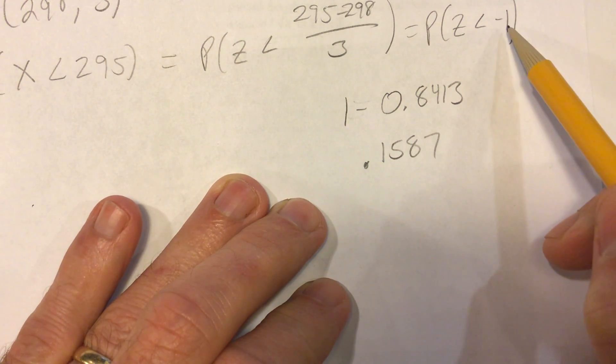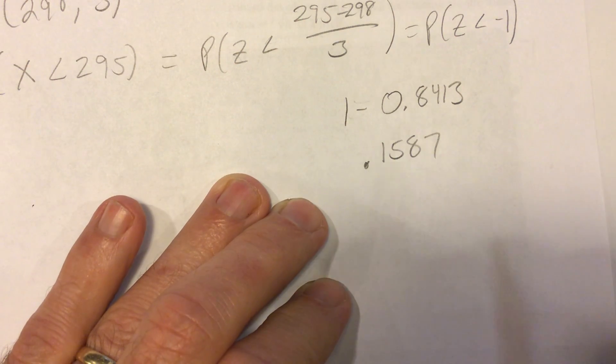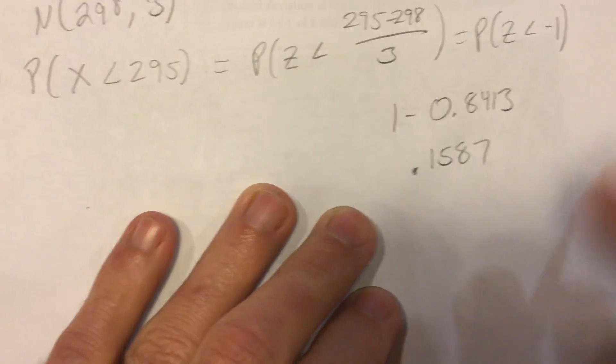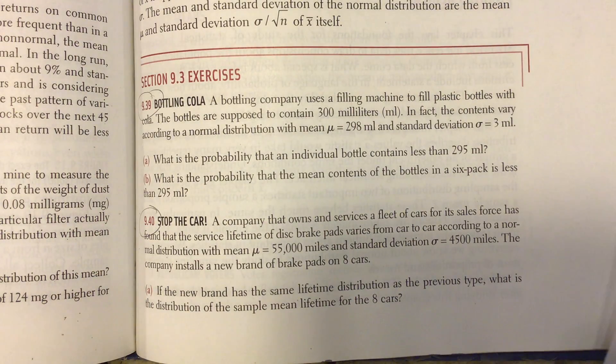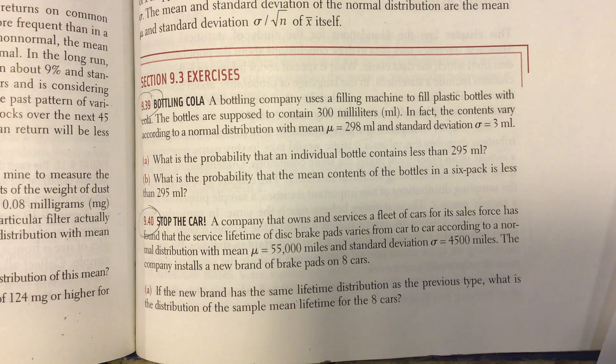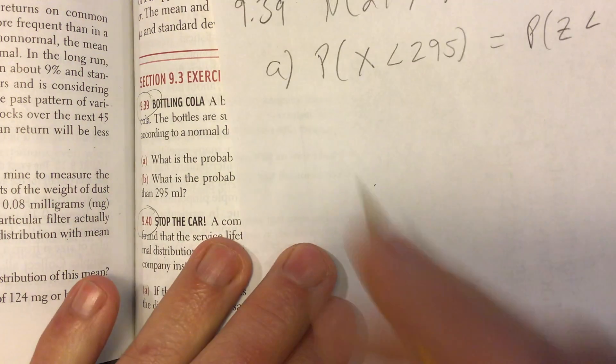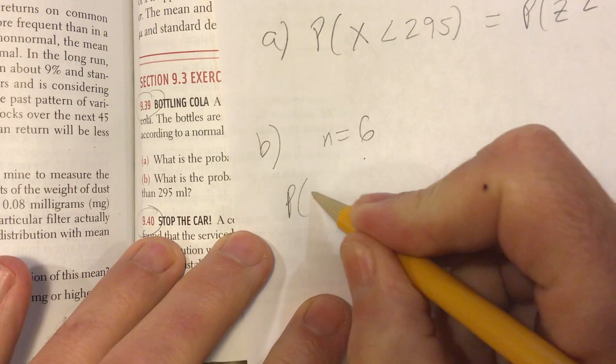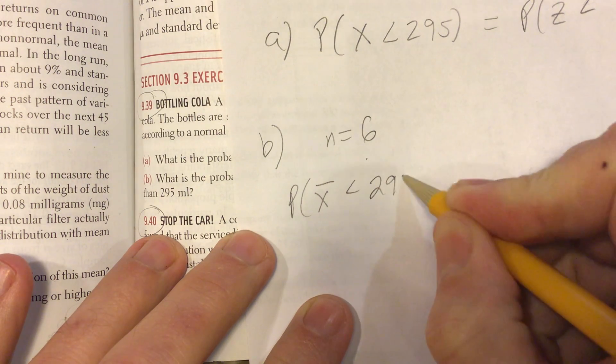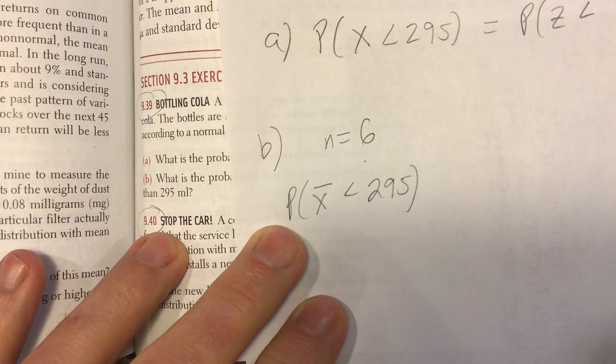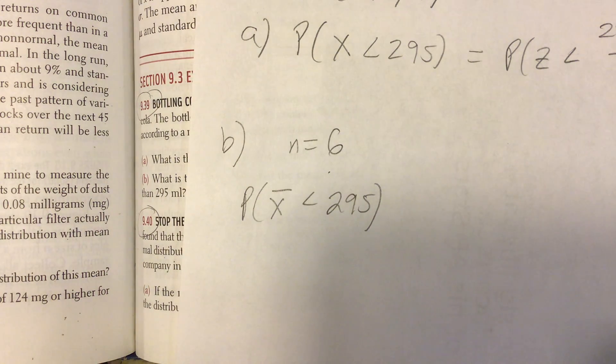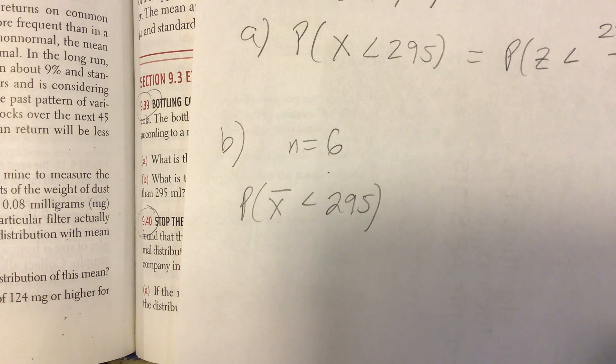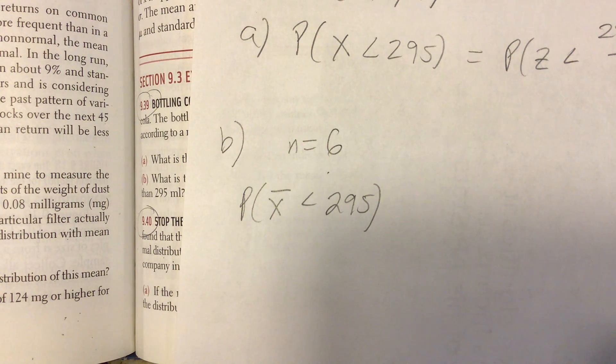Letter B: What's the probability that the mean contents of the bottles in a six-pack is less than 295? Now we have a sample size of 6, and we want to find the probability that the average of those 6 is less than 295. Since we're talking about 6 bottles instead of 1 bottle, it's going to make our variance less, which will make our probability smaller in this case.